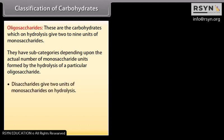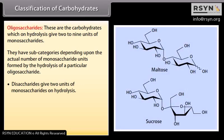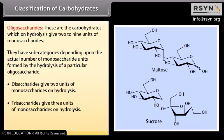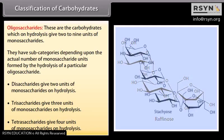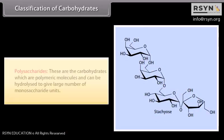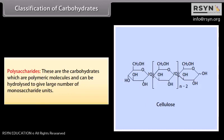Disaccharides give two units of monosaccharides on hydrolysis, for example maltose and sucrose. Trisaccharides give three units, for example raffinose. Tetrasaccharides give four units, for example stachyose. Polysaccharides are polymeric molecules that can be hydrolyzed to give a large number of monosaccharide units, for example starch, glycogen, and cellulose.